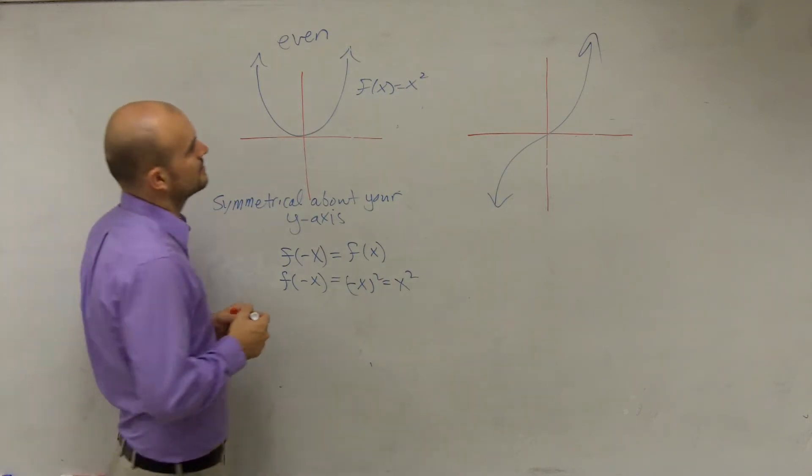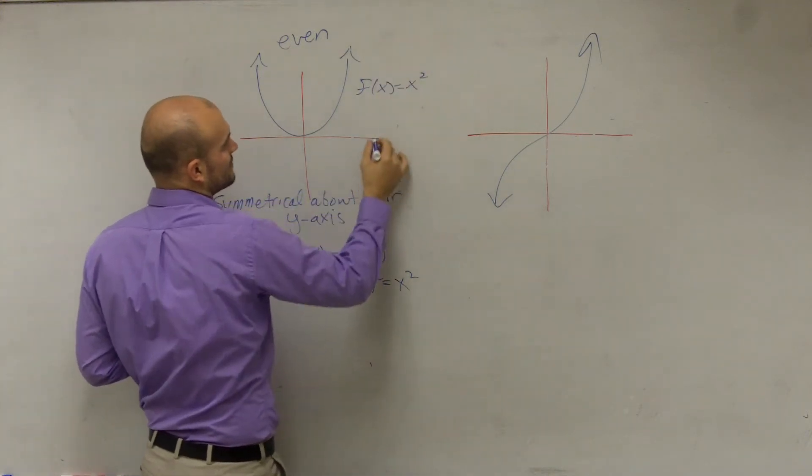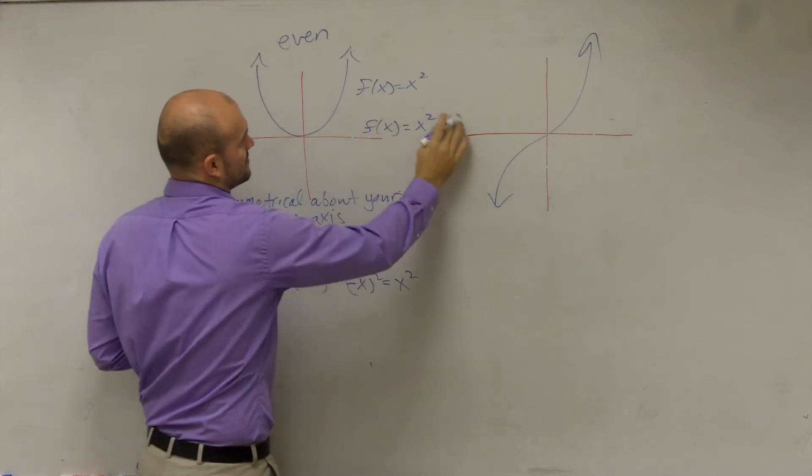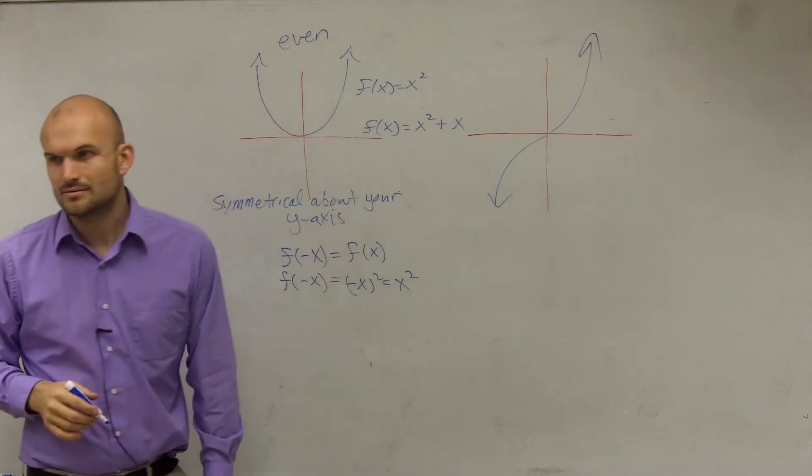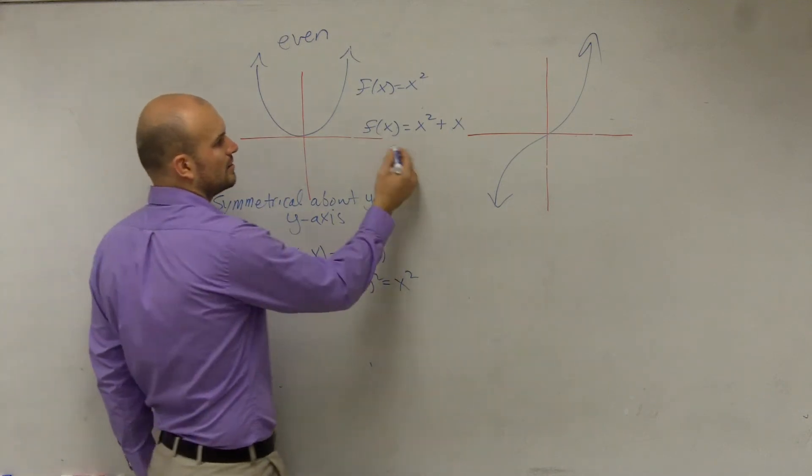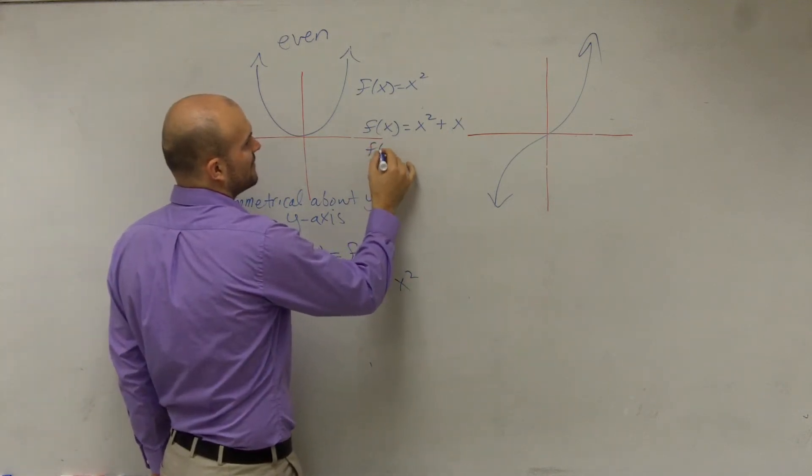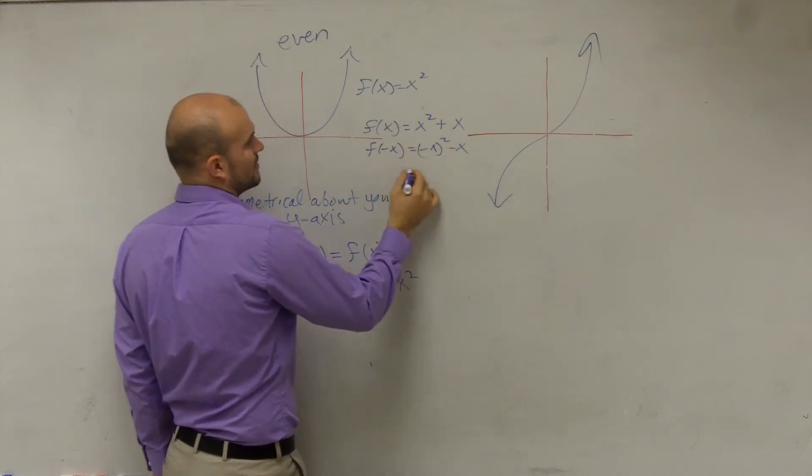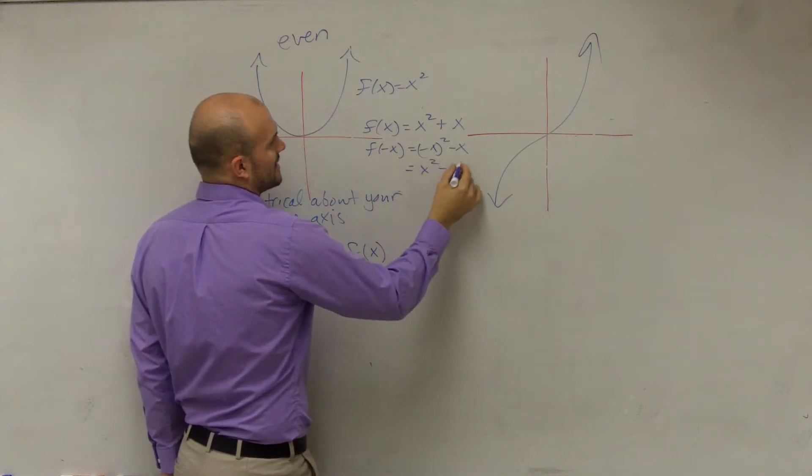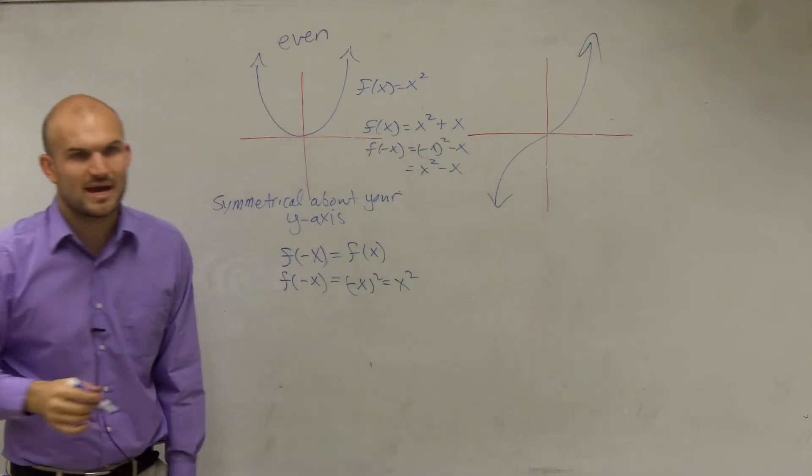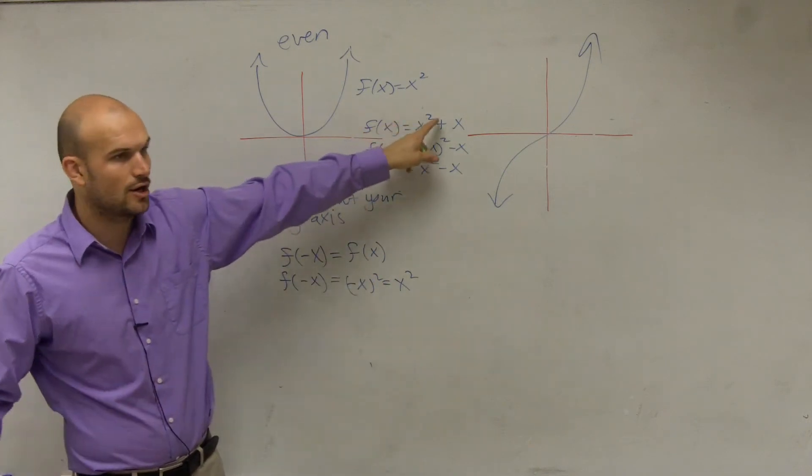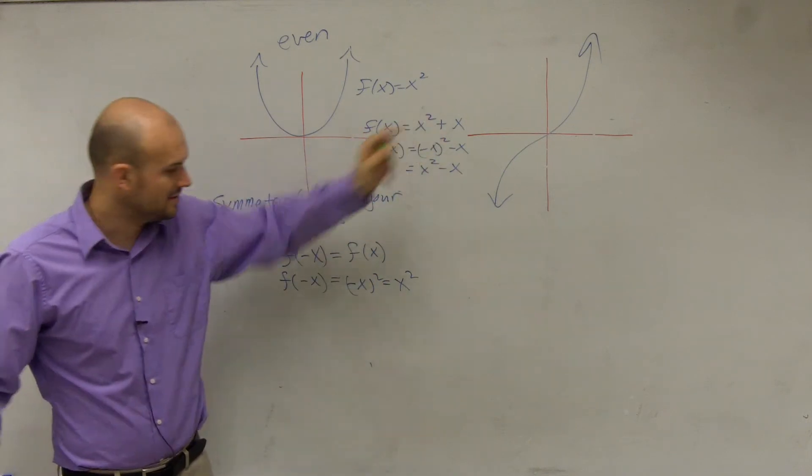Let's look at this one. This is not even. F of x equals x squared plus x. That's not even. Why is that not even? Well, let's take a look at it. If I did f of negative x equals negative x squared minus x, that equals x squared minus x. Is that the same as my f of x? No. So that is not an even function. Just don't think if you have an even exponent, it's even. It's not always the case.